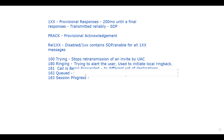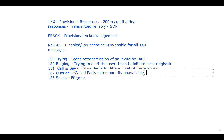Then we have 182 Queued, which means the called party is temporarily unavailable, but the server has decided to queue the call rather than reject it. Once it queues the call, whenever that server or call becomes available, it will return the appropriate final status.